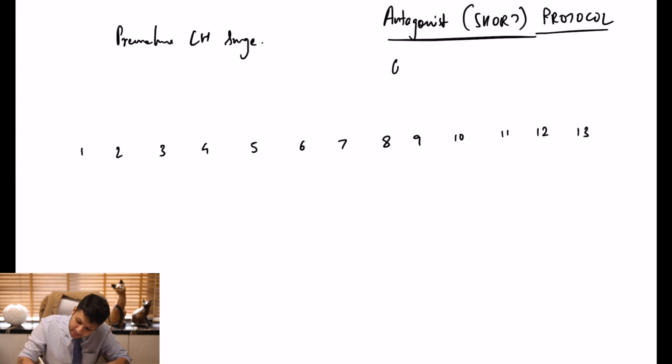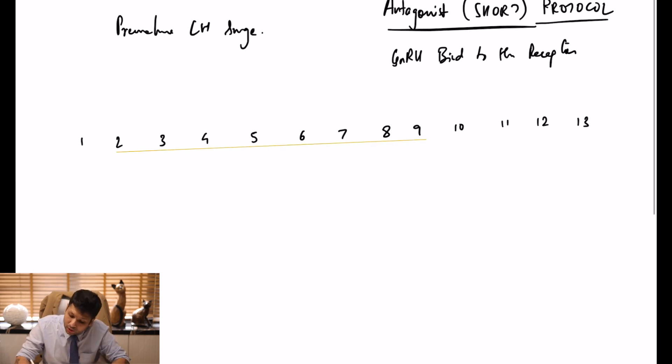A GnRH antagonist is going to bind straight to the receptor. Because it binds to the receptor it is very quick, immediate, and reversible. It is quick, it is immediate action, and it is very rapidly reversible.